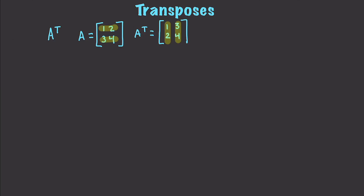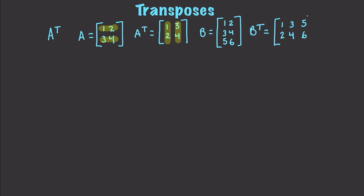But what happens whenever we have a rectangular matrix? So let's have a matrix B, and let's say it's 1, 2, 3, 4, 5, 6. Well, we just do the exact same thing — we just get a different result. In this situation, we take the 1 and the 2, the 3 and the 4, and the 5 and the 6. And you can see here that this matrix is 3 by 2, while this one is 2 by 3. So that is the basics of transposition.